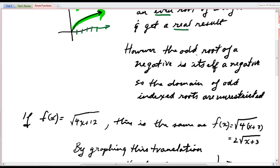However, the odd root of a negative is itself a negative. And so the domain of odd indexed roots is unrestricted. Why? Because you can take the odd root of a positive, 0, or a negative. It doesn't matter.